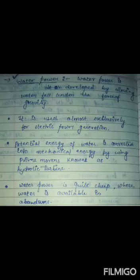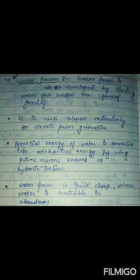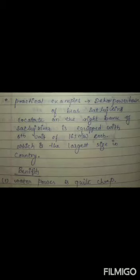Water power is developed by allowing water to fall under the force of gravity, and it is used almost exclusively for electric power generation. The potential energy of water is converted into mechanical energy using a prime mover known as a hydraulic turbine. Water power is quite cheap where water is available in abundant form. For example, the Dehar powerhouse, located on the right bank of a river, is equipped with six units of 165 MW each, which is the largest of its kind in the country.